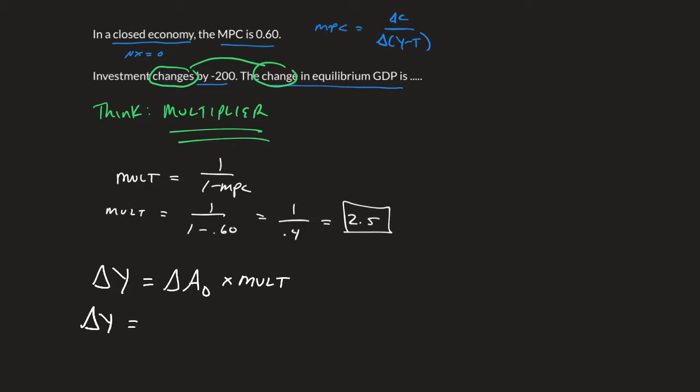My change in autonomous spending given above was -200. I multiply that by 2.5, so my answer is: the equilibrium GDP will change by 200 times 2.5, which equals 500. In this case it's negative 500 because we saw a decrease in investment.